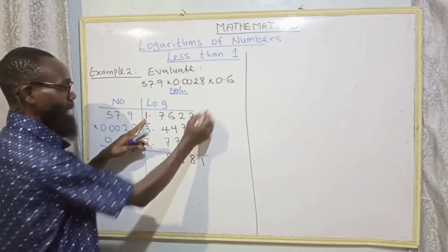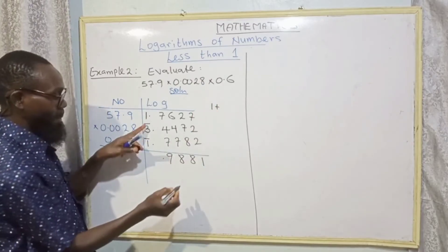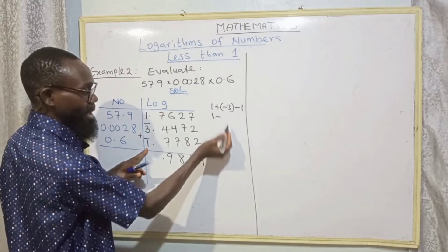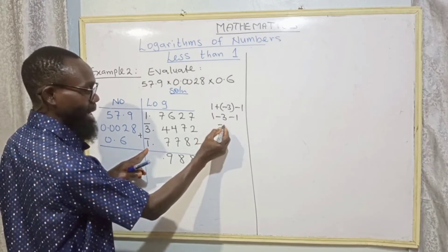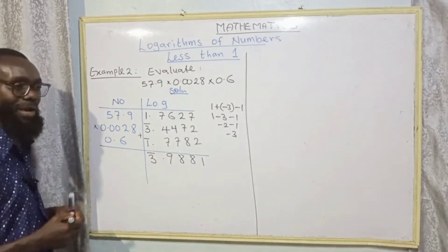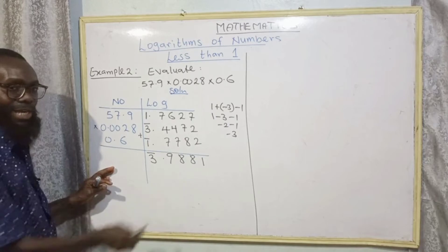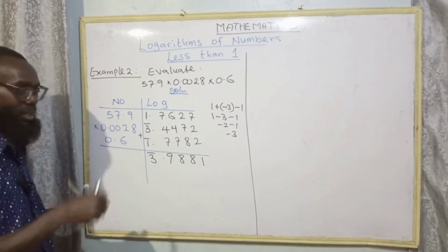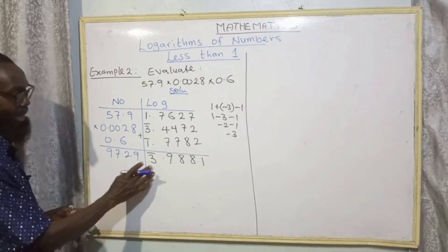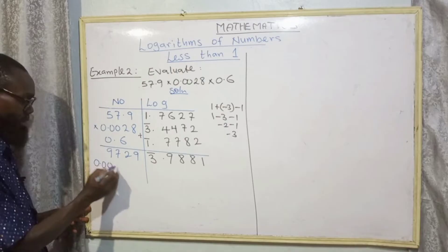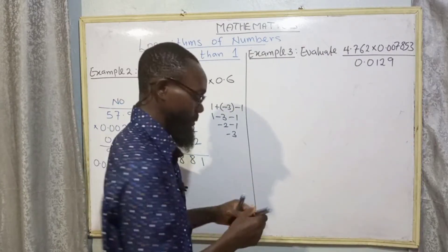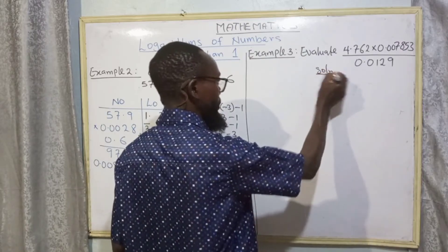For the integer: 1 (from 57.9) plus bar three (minus three) plus bar one (minus one) gives 1 minus 3 minus 1 equals minus three, which is bar three. We check the anti-log table: 98 under 8 difference 1 gives 9729. Bar three means three zeros, so our final answer is 0.0009729.